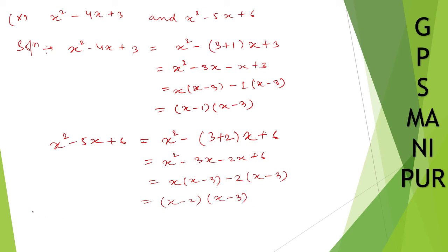Okay, therefore, LCM of x square minus 4x plus 3 and x square minus 5x plus 6 is: